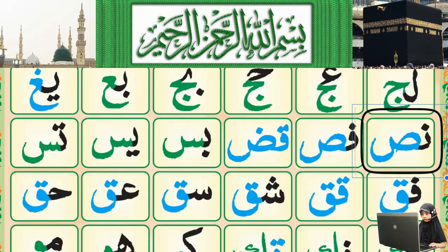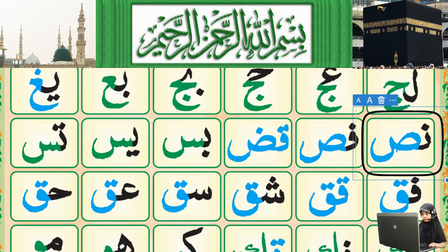In this box, two letters are connected together. The first letter is Noon and the second letter is Sword. The last letter will be capital and the first letter will be small. Some students read this as Za or Zal, but this is not Za or Zal because Za and Zal will not connect to the next letter. But Noon can be connected or joined to the next letter. So this is Noon-Sword, Noon-Sword, Noon-Sword.